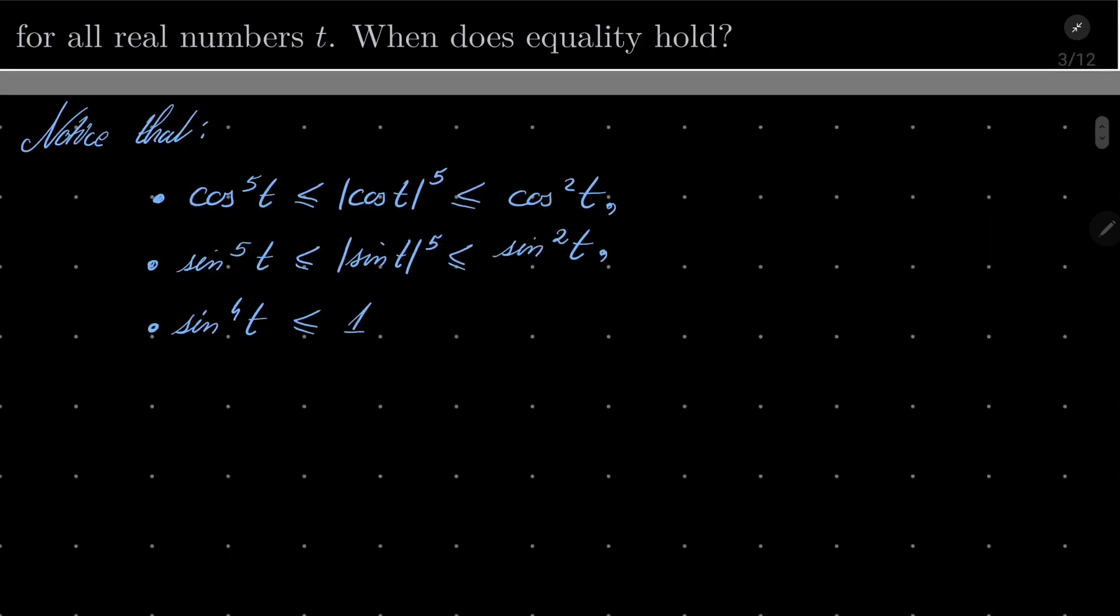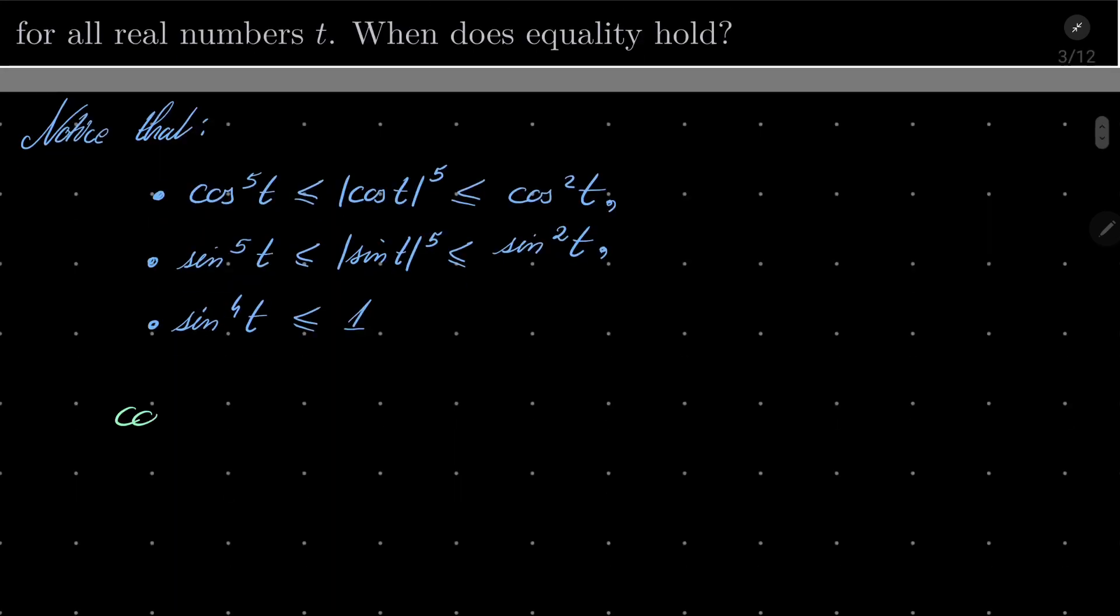So, we have the following, combining all of that. Cosine to the 5th power of t plus sine to the 5th power of t plus sine to the 4th power of t is less than or equal cosine squared of t plus sine squared of t plus 1, but what is cosine squared plus sine squared? It's 1. And that proves our inequality.